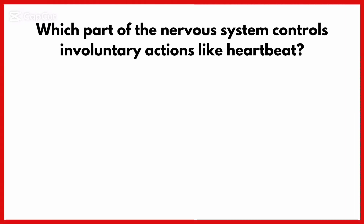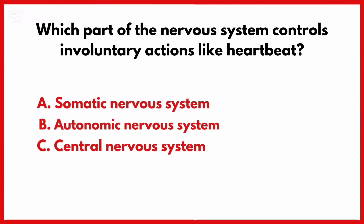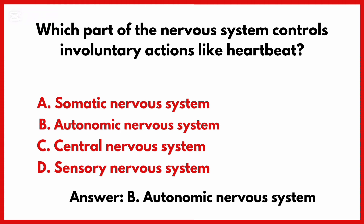Which part of the nervous system controls involuntary actions like heartbeat? Correct answer is option B: Autonomic nervous system.